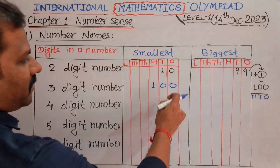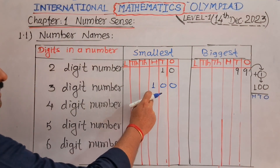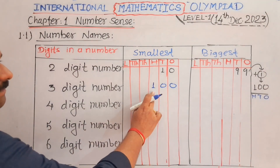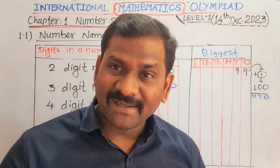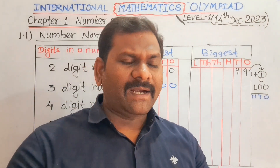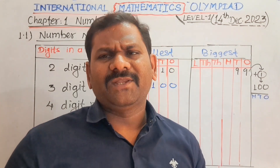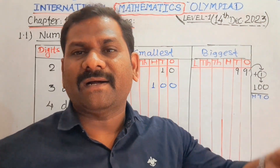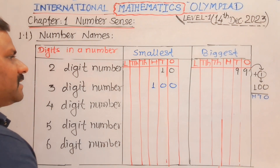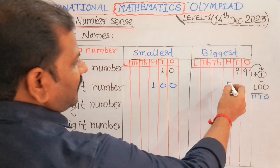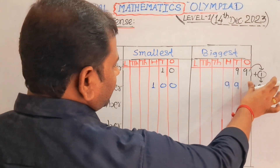Number 1 is at the units place, zero at the ones place, zero at the tens place, and one at the hundreds place — giving us 100. So 100 is the smallest three-digit number. You can take zero at any place except the hundreds place in a three-digit number. And 999 is the biggest three-digit number.